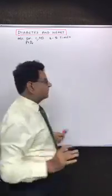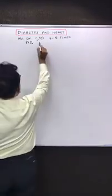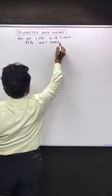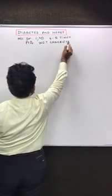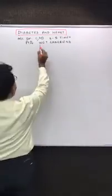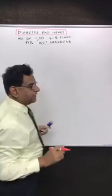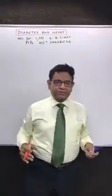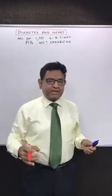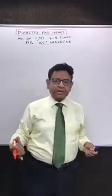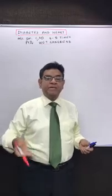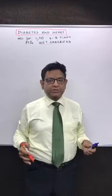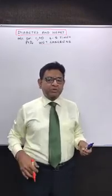Regarding peripheral vascular disease, remember it leads to wet gangrene, and it spreads very fast. This is a very frequently asked question. For example, if gangrene is occurring in the great toe in the morning, by evening it may have spread much more proximal.